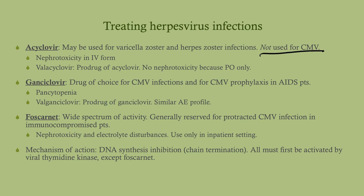Acyclovir can have nephrotoxicity when given IV, though we generally don't give it IV often. Valacyclovir is a prodrug of acyclovir with better oral bioavailability, and since it's not given IV, there are no significant adverse effects. Ganciclovir is the drug of choice for CMV infections and is also used for CMV prophylaxis in AIDS patients. Ganciclovir is more problematic — it can cause pancytopenia, so any cell line can be disturbed. Patients on long-term CMV prophylaxis need routine CBC monitoring.